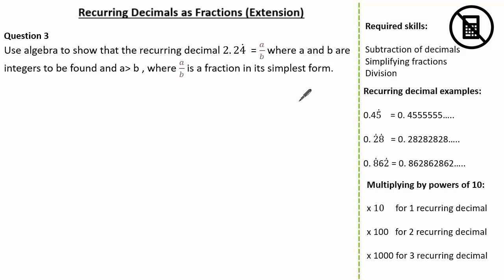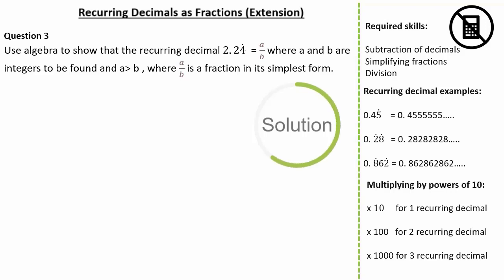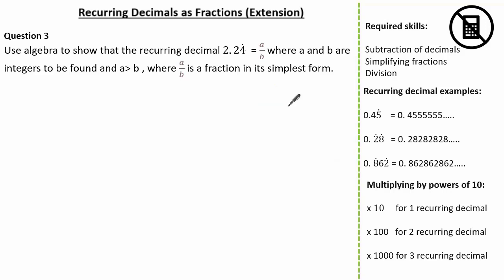Now let's look at a different question. Here the question wants us to use algebra to show the recurring decimal 2.24 recurring is equal to a over b, where a and b are integers to be found and a is greater than b. We also need to identify a and b as a fraction in its simplest form. See if you can give it a go and press pause if you need. Just like before, let's identify 2.24 recurring as a decimal. Here you can see the dot is above the 4, so therefore the only digit that recurs is the 4.